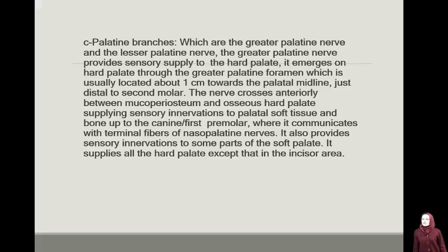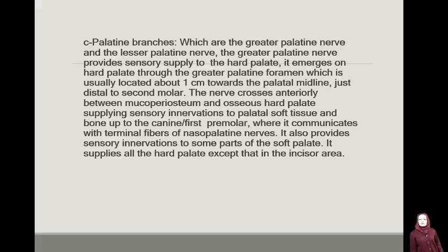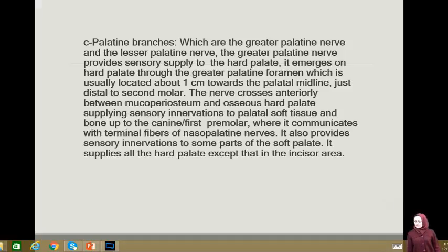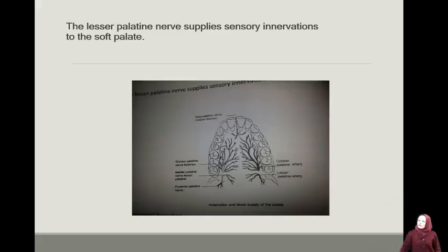C) Palatine branches, which are the greater palatine nerve and the lesser palatine nerve. The greater palatine nerve provides sensory supply to the hard palate. It emerges through the greater palatine foramen, usually located about 1 cm towards the palatal midline, just distal to the second molar. The nerve crosses anteriorly between the mucoperiosteum and the mucous tissue of the hard palate, supplying sensory innervations to the palatal soft tissue and bone up to the canine and first premolar, where it communicates with terminal fibers of the nasopalatine nerve. The lesser palatine nerve supplies sensory innervations to the soft palate.